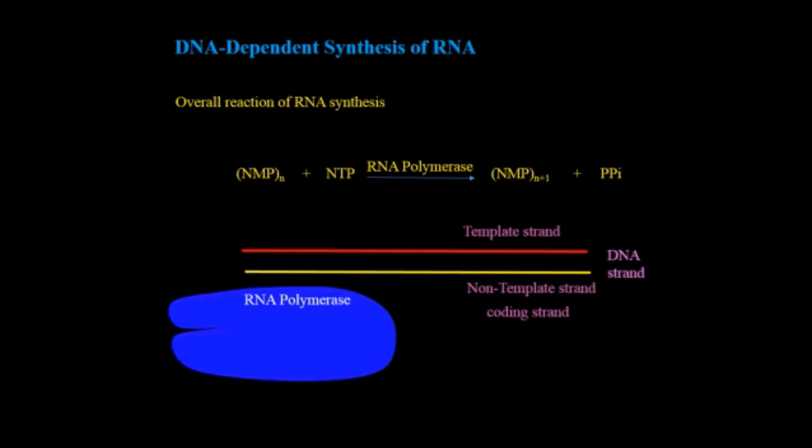Like DNA polymerase, RNA polymerase also has subunits. It has two alpha subunits and one beta, beta prime, and omega subunit. The most important subunit in RNA polymerase is the sigma. It is specific for each RNA polymerase.